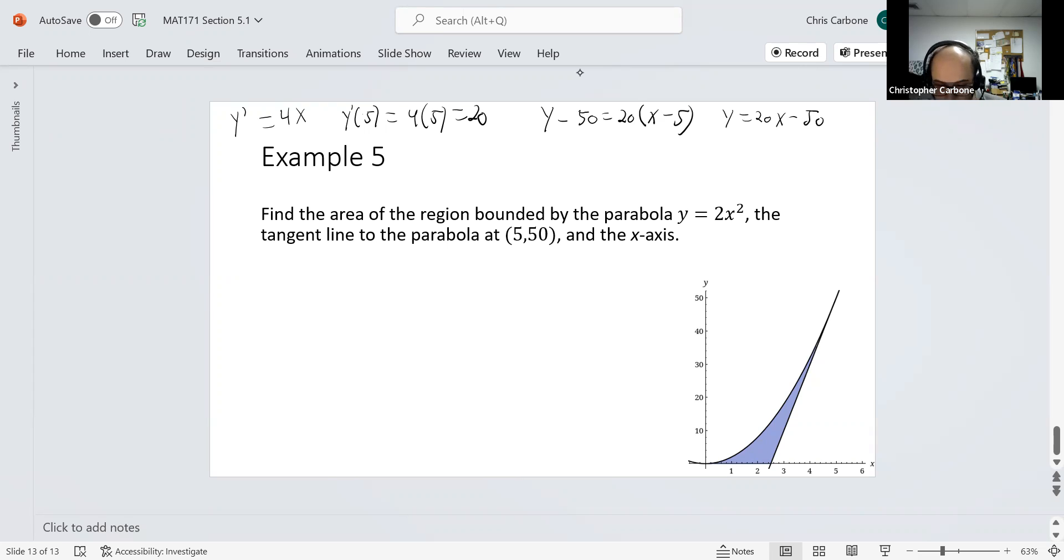It turns out that it's much easier to do this calculation if we took y values as opposed to x values, since we would have two integrations. To get the equation solved for x, the tangent line one, this would be x equals 1/20 times y plus 50. And the parabola y equals 2x squared, this would be x equals the square root of y divided by 2.